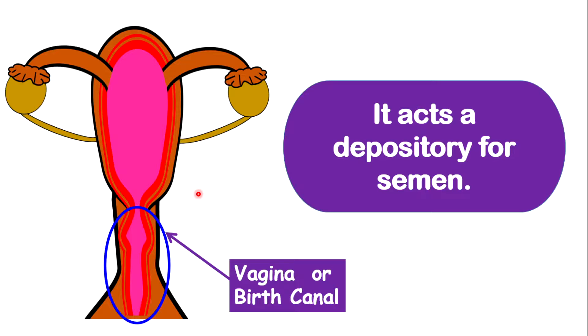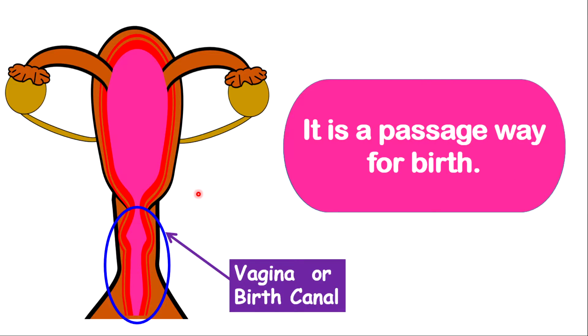The vagina acts as a depository for semen. So this is the area, the place, where semen will be deposited after they are being, after the sperm cells are being ejaculated. The vagina, as mentioned, it serves as a passageway for birth.